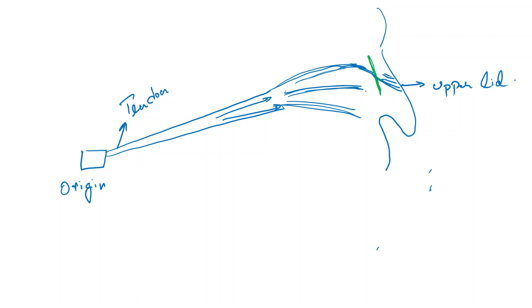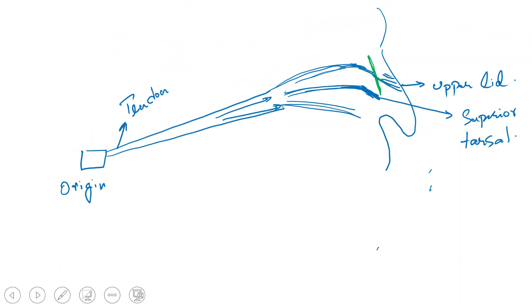The intermediate — middle — lamella is seen to make up a separate set of muscle called the superior tarsal muscle. This middle lamella makes up the superior tarsal muscle, which tends to get attached over the superior tarsus of the upper eyelid.